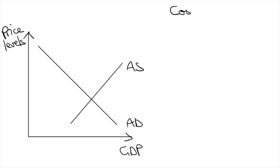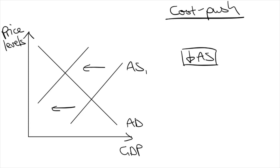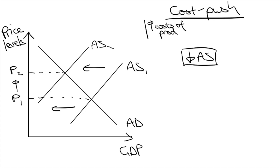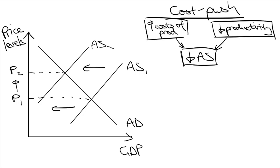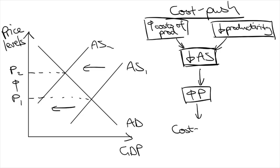The next type of inflation is Cost-Push Inflation. Cost-Push Inflation happens when there's an increase in production costs, such as an increase in oil prices or wages, or a decrease in productivity. Producers will pass these higher costs onto consumers by increasing prices.